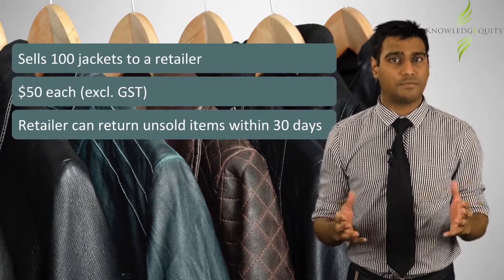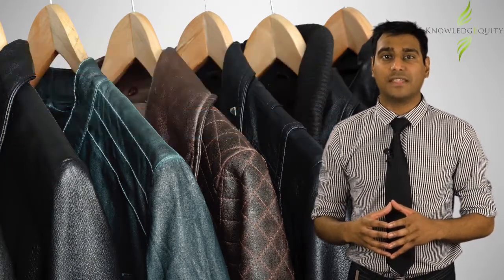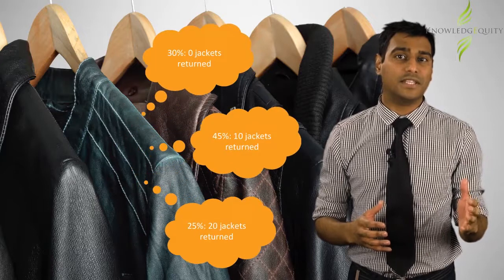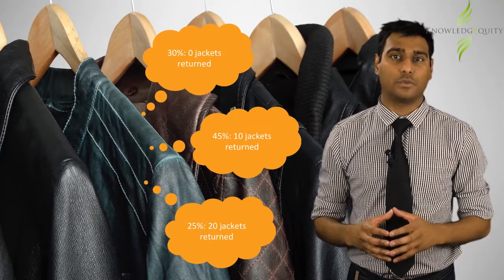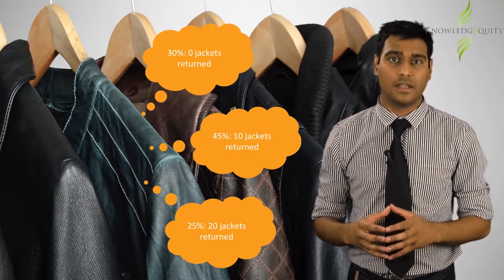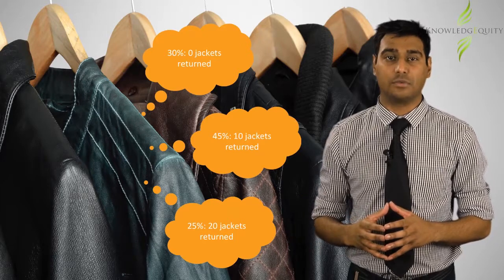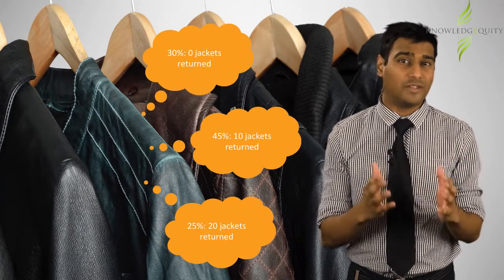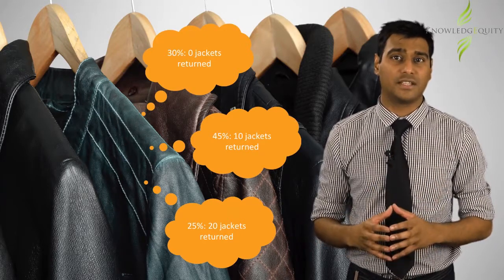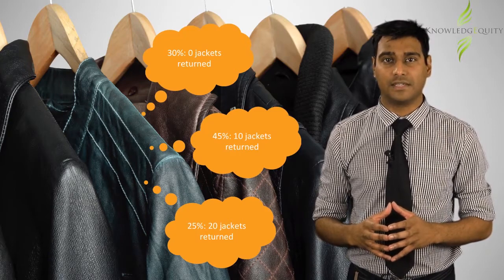Based on past experience, Fashion Limited believes that there is a 30% chance that no jackets would be returned, while there is a 45% chance that 10 jackets would be returned. There is only a 25% chance that 20 jackets would be returned. What would be the transaction price if Fashion Limited applied the expected value method and the most likely method?